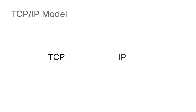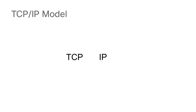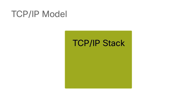TCP/IP is a protocol suite. It doesn't just include TCP — the Transmission Control Protocol — and IP — the Internet Protocol. There are a number of other protocols specified as part of the TCP/IP stack, including the User Datagram Protocol (UDP), ICMP (the Internet Control Message Protocol), and a number of others.